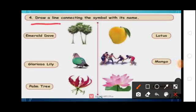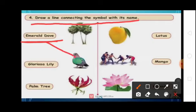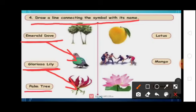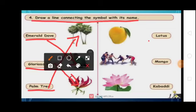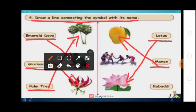Next one, draw a line connecting the symbol with its name. First one, Emerald dove — E-M-E-R-A-L-D D-O-V-E. Match this one to Emerald dove. Next, Gloriosa lily — G-L-O-R-I-O-S-A L-I-L-Y. Match this one to Gloriosa lily. Next, Palm tree — P-A-L-M T-R-E-E. Match this one to palm tree. Next, Lotus — L-O-T-U-S. Match this one to lotus. Next, Mango — M-A-N-G-O. Match this one to mango. Next, Kabadi — K-A-B-A-D-D-I. Match this one to kabadi.